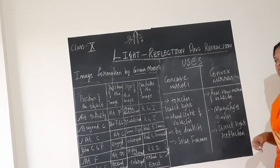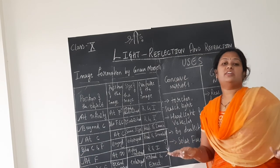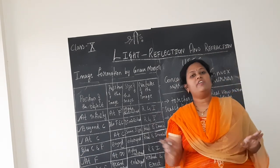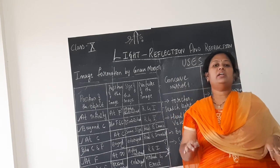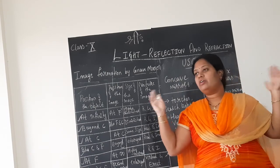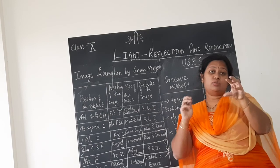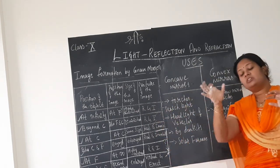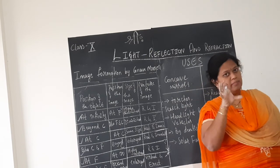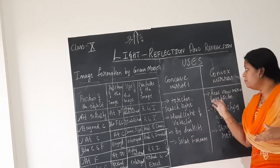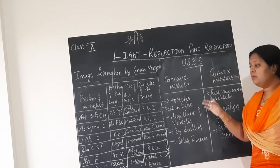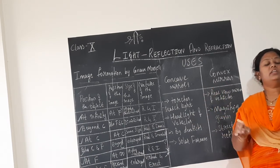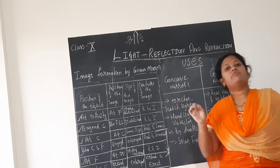The main use of convex mirror is in rear view mirrors of vehicles. The lorry or the bus or the truck appears so small — a diminished image will be formed, which is captured in the small mirror. So that is the main purpose, the work done by the convex mirror. Convex mirror's main use is in the rear view mirrors of the vehicles.